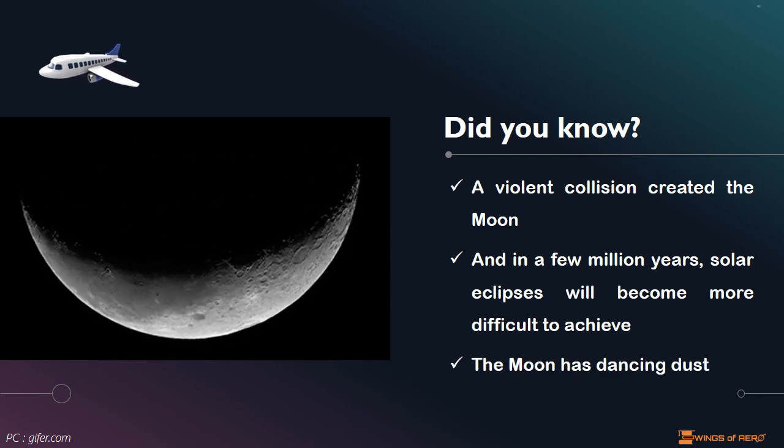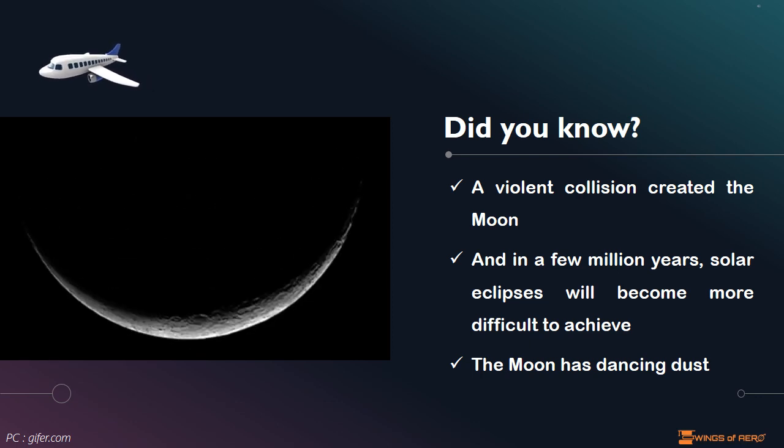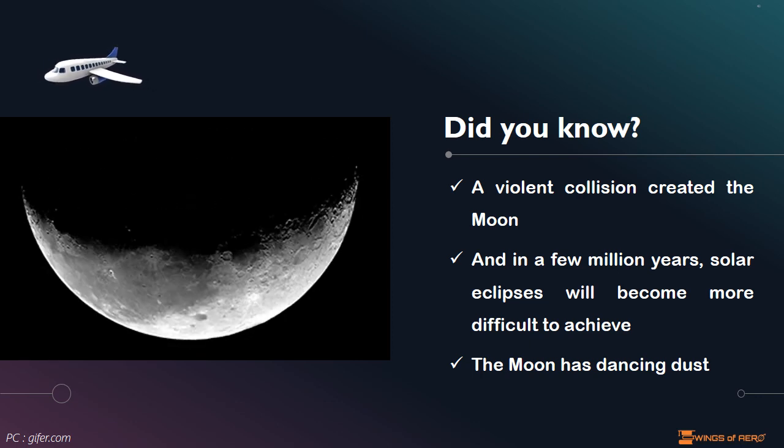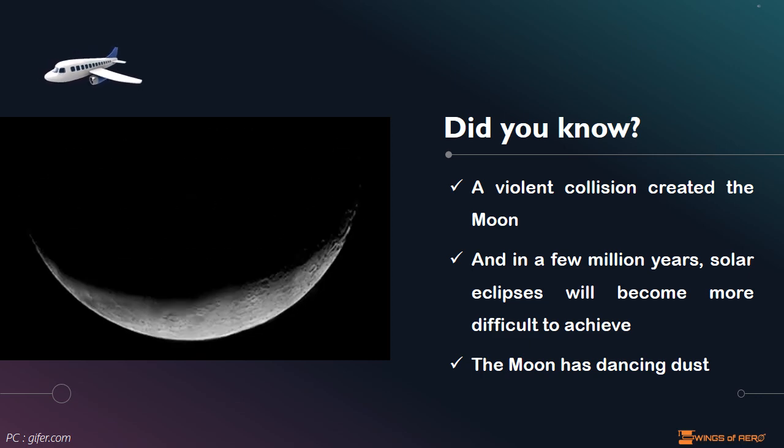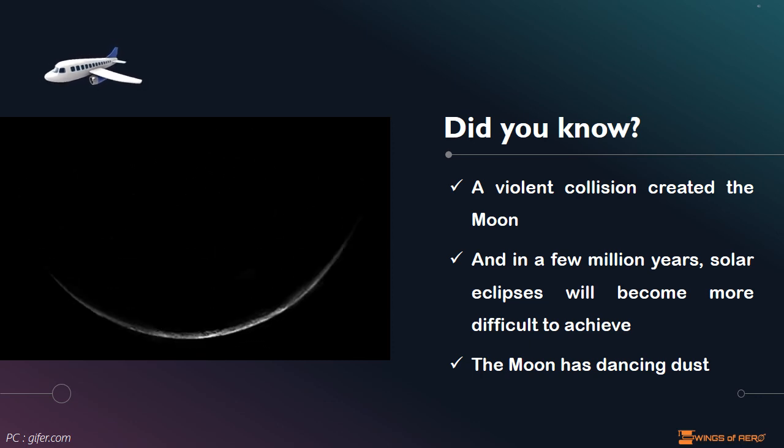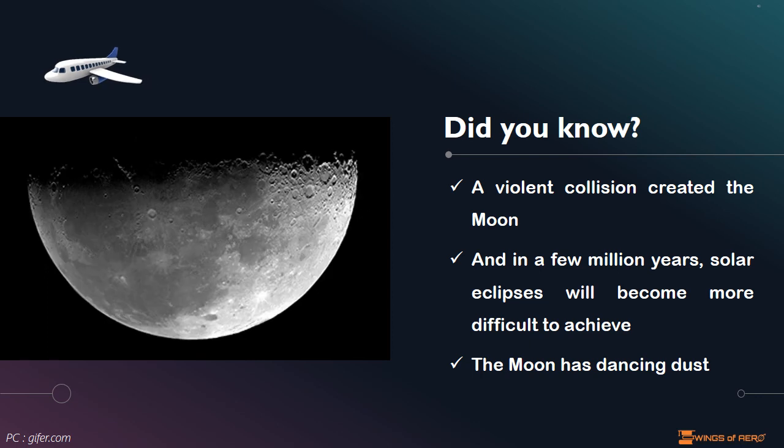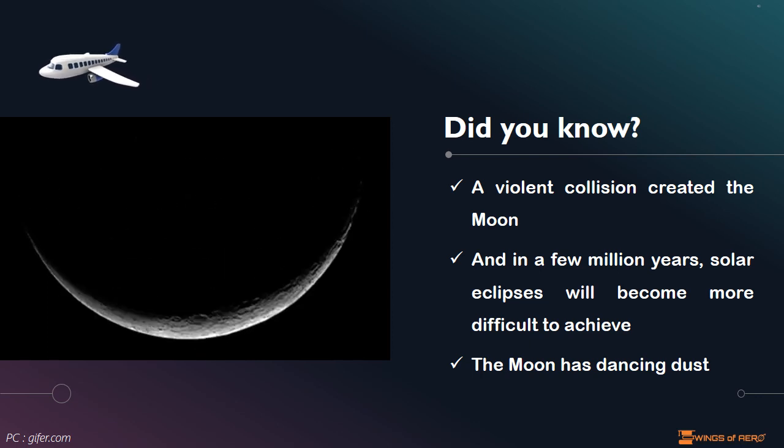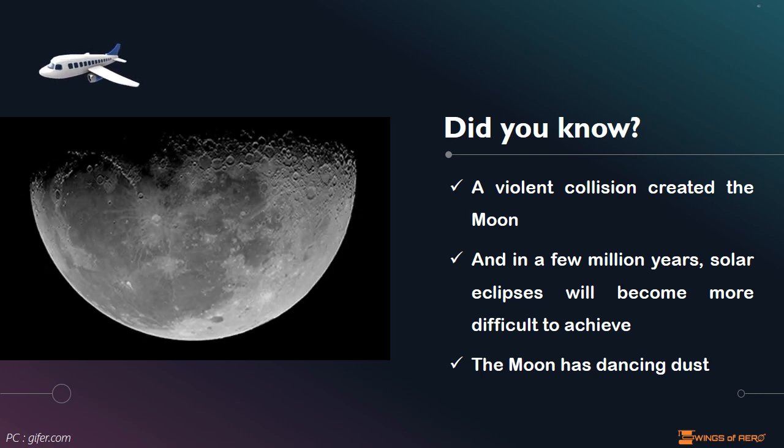The moon has dancing dust. Especially around sunrise and sunset on the moon, dust tends to hover above the surface. It might have something to do with the particles being electrically charged, or it might be some other phenomenon at work. The effect was noticed by some of the Apollo astronauts and also studied in detail during the LADEE mission.